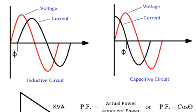Capacitive loads cause the current wave to lead the voltage wave. Taking voltage as reference, current leads the voltage by an angle phi — thus the power factor of a capacitive load is leading. Some examples of capacitive loads are synchronous condensers and TV picture tubes.